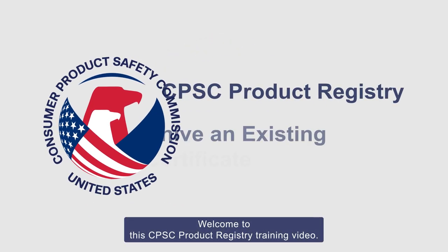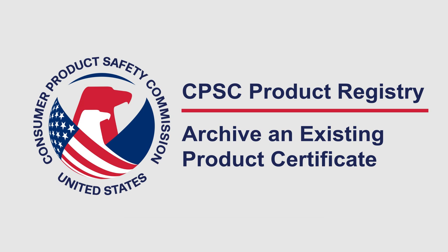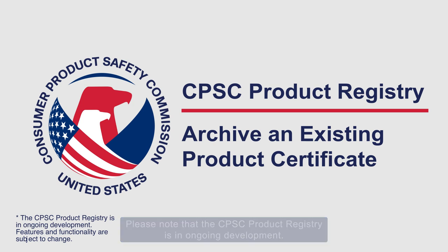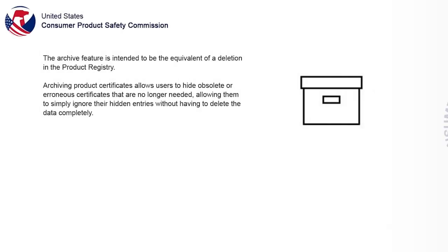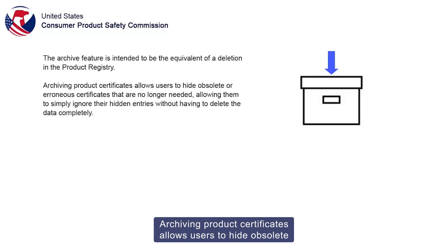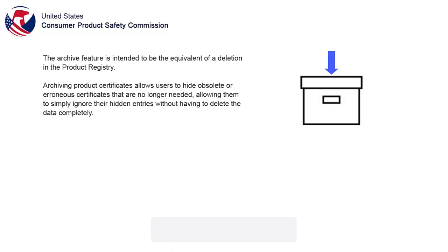Welcome to the CPSC Product Registry training video. This video will demonstrate how to archive an existing product certificate. Please note that the CPSC Product Registry is an ongoing development and features and functionality are subject to change. The archive feature is intended to be the equivalent of a deletion in the Product Registry, allowing users to hide obsolete or erroneous certificates that are no longer needed.